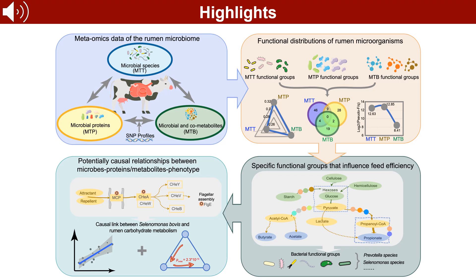This study combined Rumen metaproteome, metatranscriptome, and metabolome data to identify active microbial functions influencing feed efficiency. We found potential causal relationships between microbes, proteins, or metabolites and phenotypes. Specifically, Selenomonas bovis was linked to Rumen carbohydrate metabolism, impacting dairy cow feed efficiency. This research advances from correlation to causation in understanding nutrient utilization functional groups in high feed efficiency dairy cows.